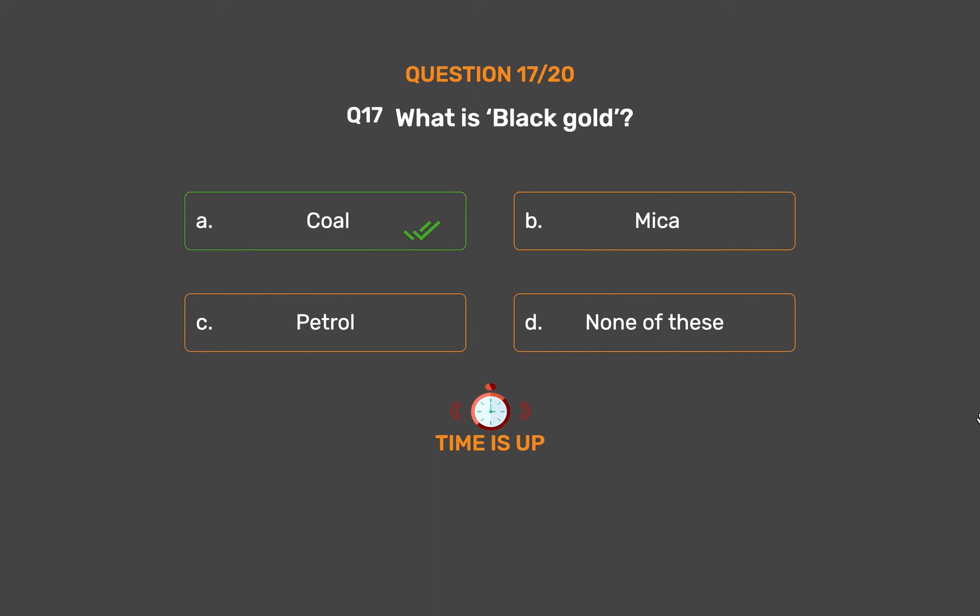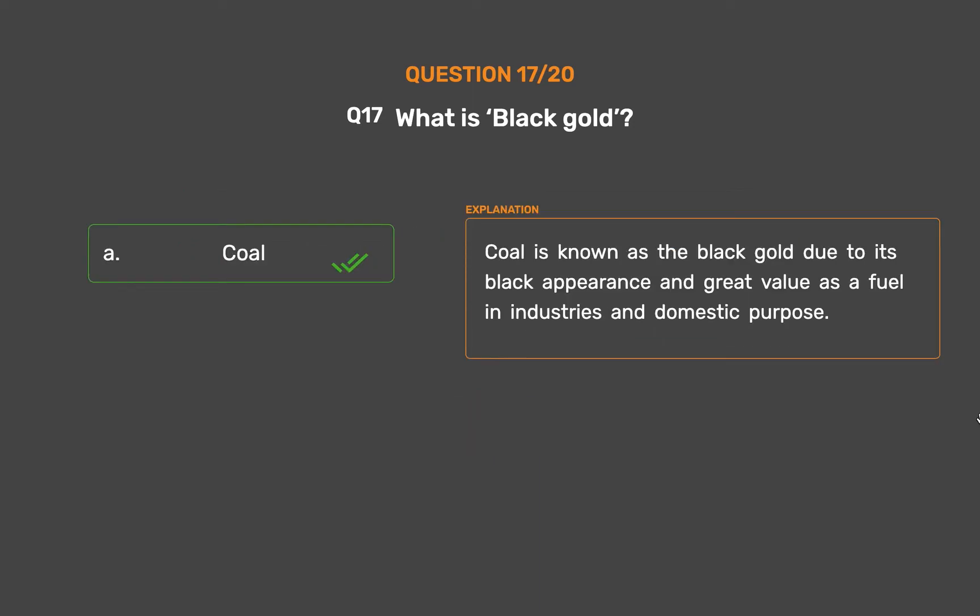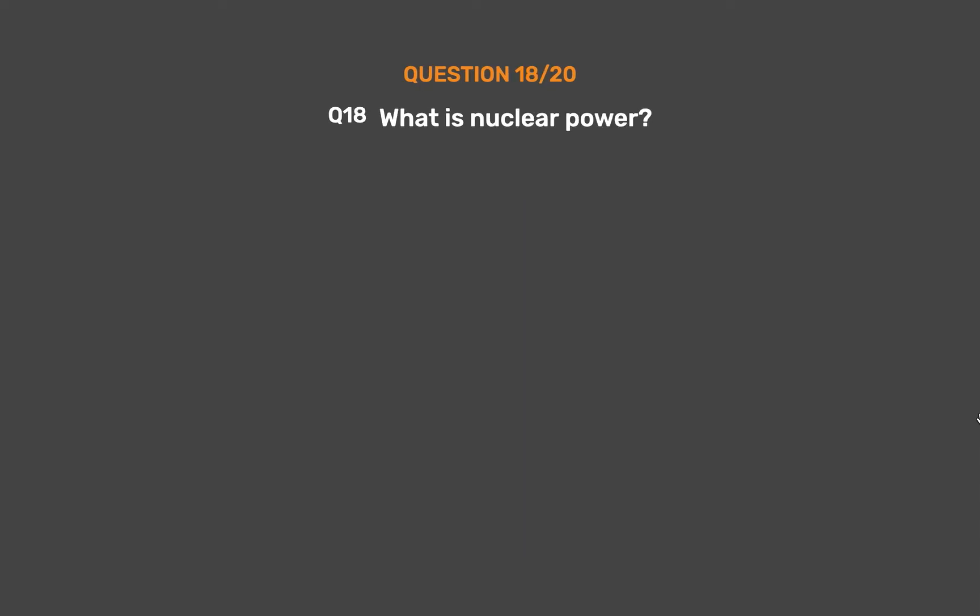The correct answer is Option A: Coal. Coal is known as black gold due to its black appearance and great value as a fuel in industries and for domestic purposes.